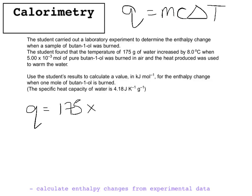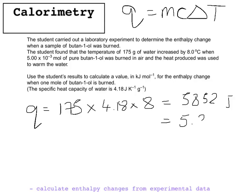So Q equals 175 times the specific heat capacity — that's what C stands for — of whatever you're heating, which is water here. The specific heat capacity of water is 4.18. Then times that by ΔT, our change in temperature. We've been told the water increased by 8 degrees, so we multiply by 8. That gives us 5,852 joules. To convert to kilojoules we divide by 1,000, giving us 5.852 kilojoules.